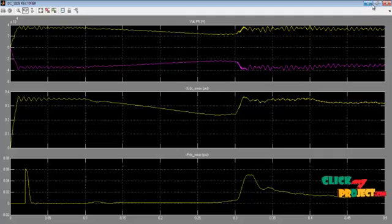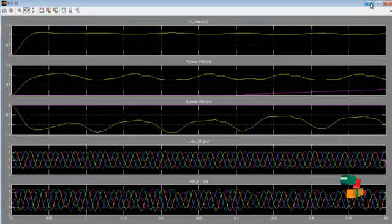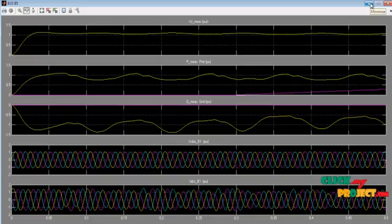Next is the bus 5 output waveforms. First is voltage, next real power, next reactive power and ABC voltages for bus 1. Next is bus 1 current waveform in terms of per unit.